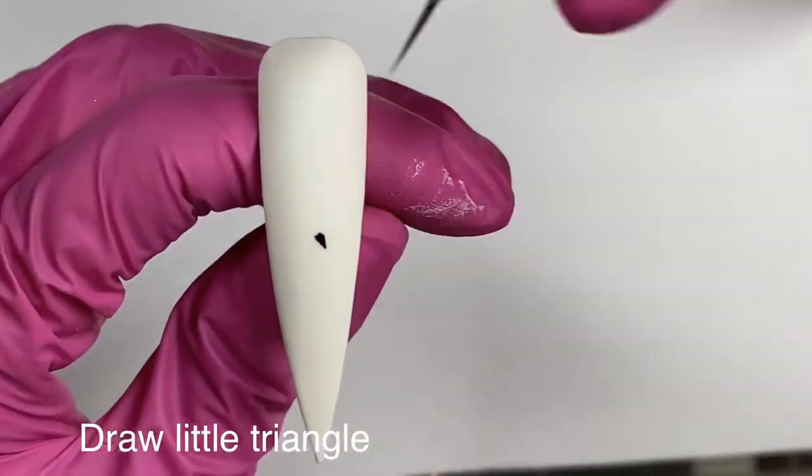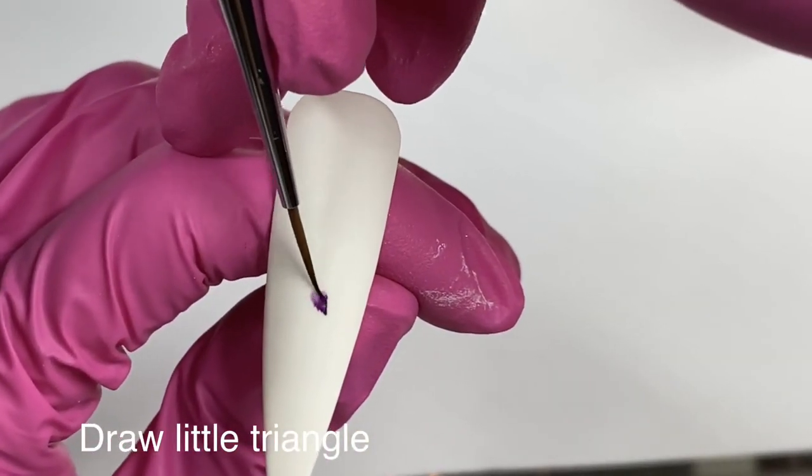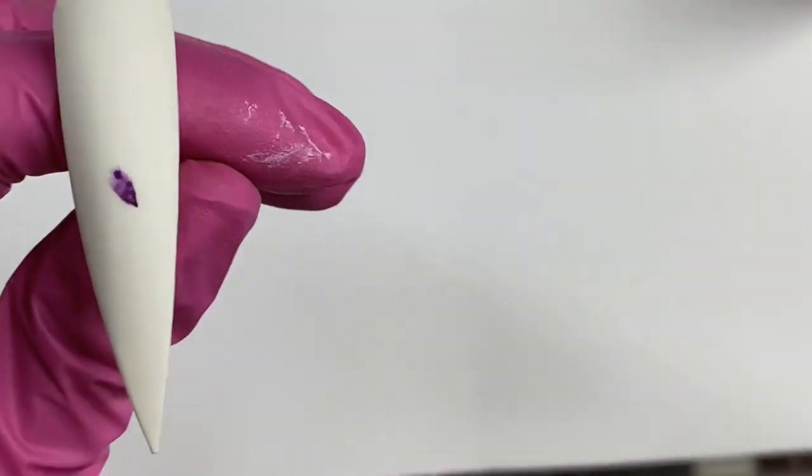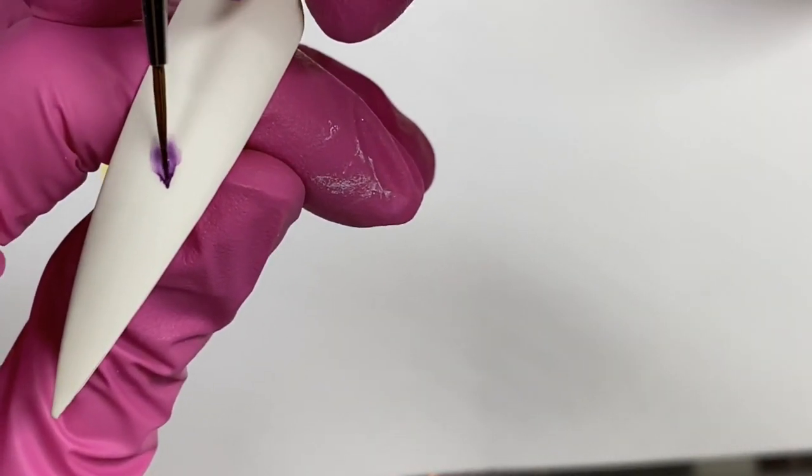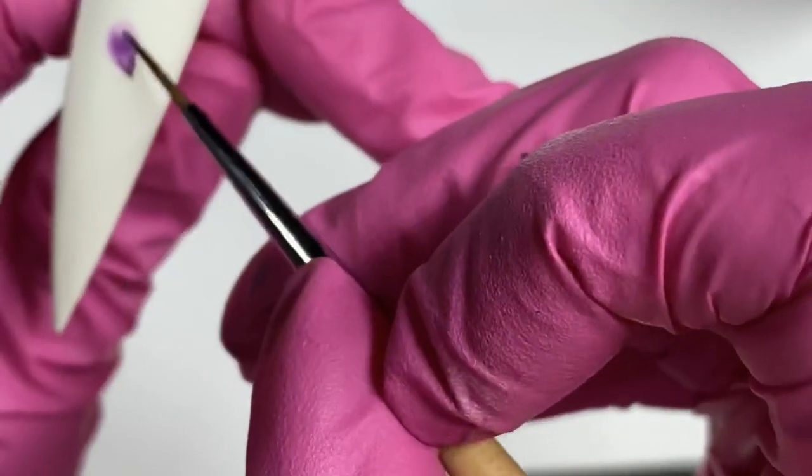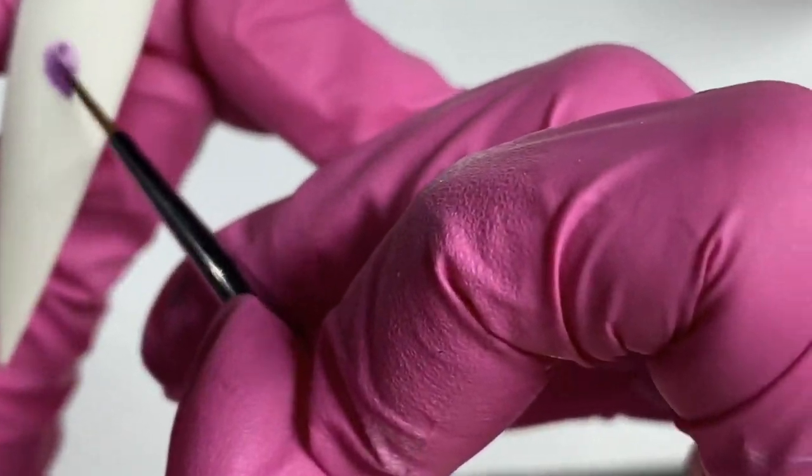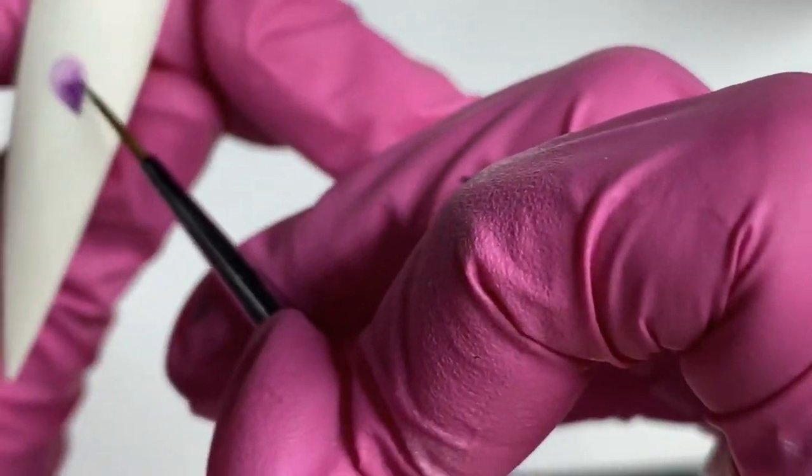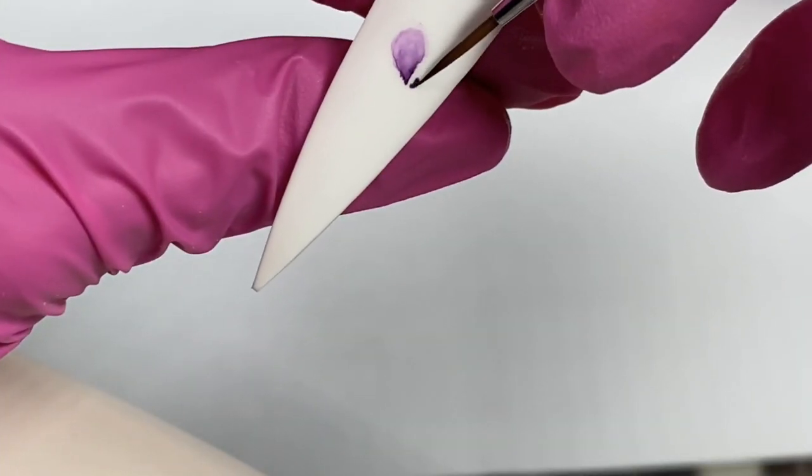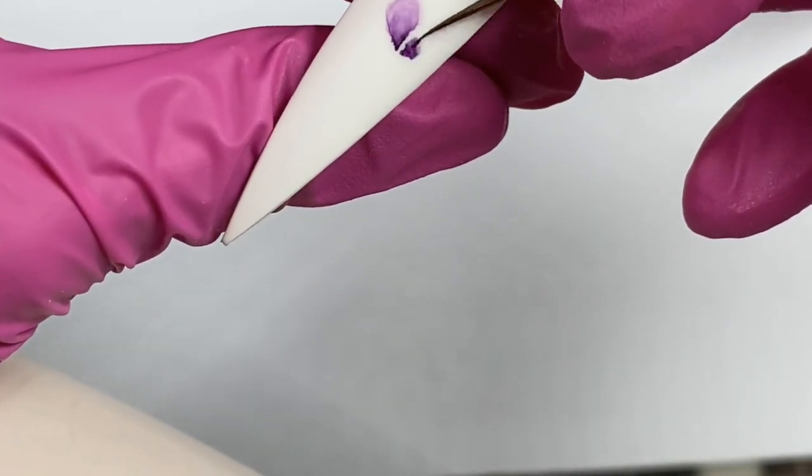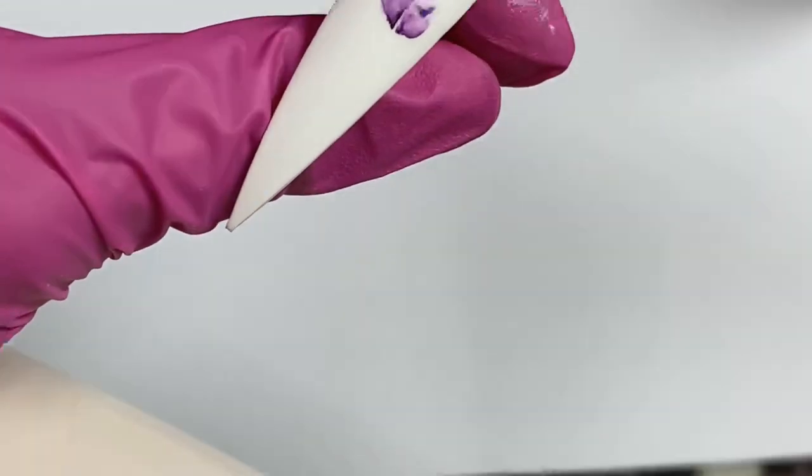We will start drawing a little triangle using color 607. Clean brush and then start blending upward to make the first petal. We will repeat to do so for the second one right next to the first petal.